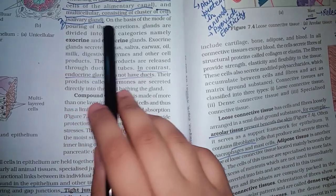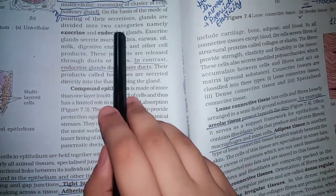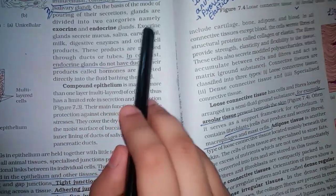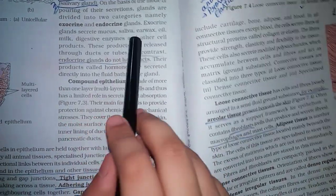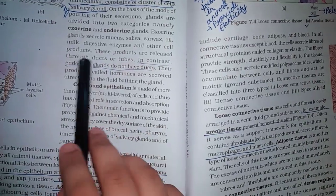On the basis of the mode of pouring of their secretions, glands are divided into two categories namely exocrine and endocrine glands. Exocrine glands secrete mucus, saliva, earwax, oil, milk, digestive enzymes and other cell products. These products are released through ducts or tubes.